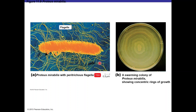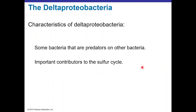Proteus vulgaris or mirabilis have peritrichous flagella and can form swarming colonies when grown on a petri plate. Because they can rotate and move with these flagella, they create these characteristic swarm patterns visible from a top view of the plate.